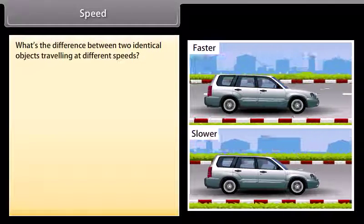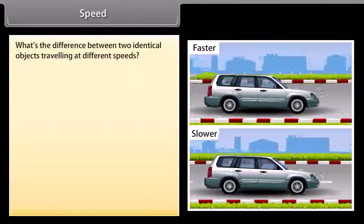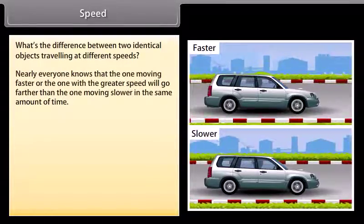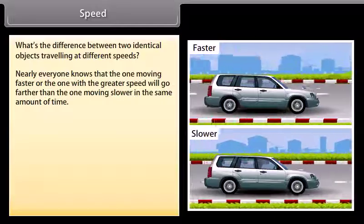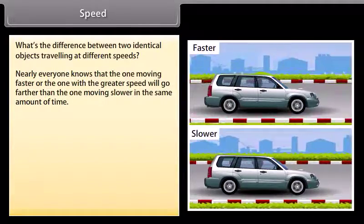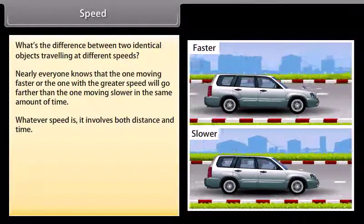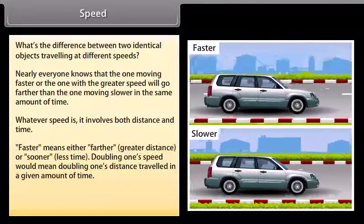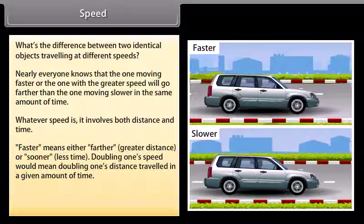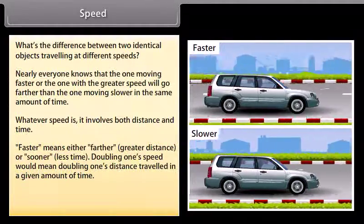Speed. Can you tell the difference between two identical objects travelling at different speeds? Nearly everyone knows that the one moving faster — the one with a greater speed — will go farther than the one moving slower in the same amount of time. Speed involves both distance and time. Faster means either farther (greater distance) or sooner (less time). Doubling one's speed would mean doubling the distance travelled in a given amount of time.